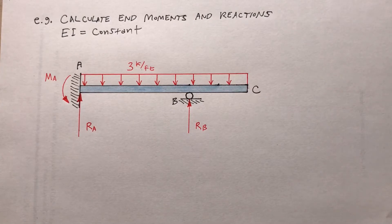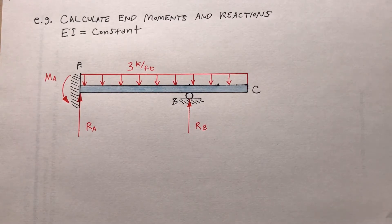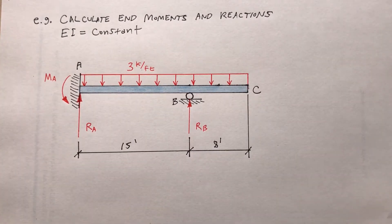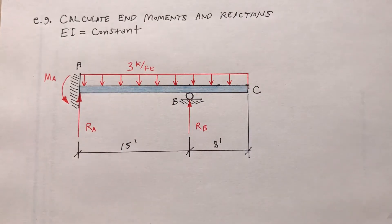You notice that the horizontal reaction at A is zero, so I don't even bother showing it. It says here calculate the end moments and reactions. Flexural rigidity EI is equal to a constant, and once I determine the reactions I could also draw the shear and moment diagrams, but I'm not going to ask for those. I just want to determine these unknown reactions. The distance between A and B is 15 feet, and from B to C is 8 feet.